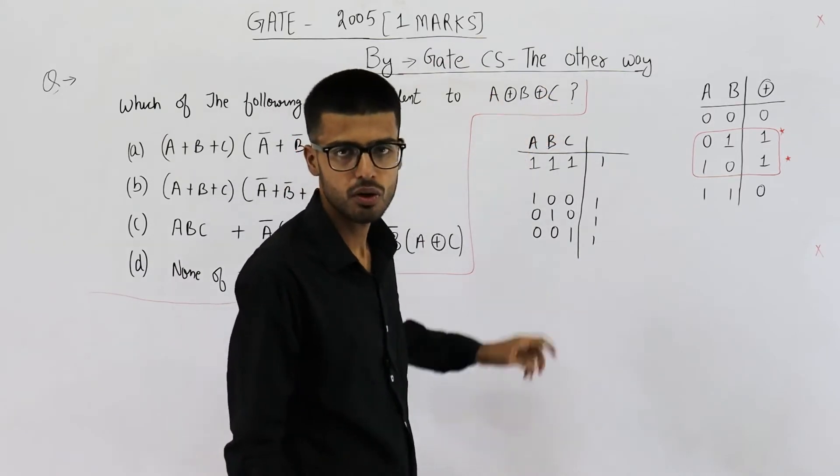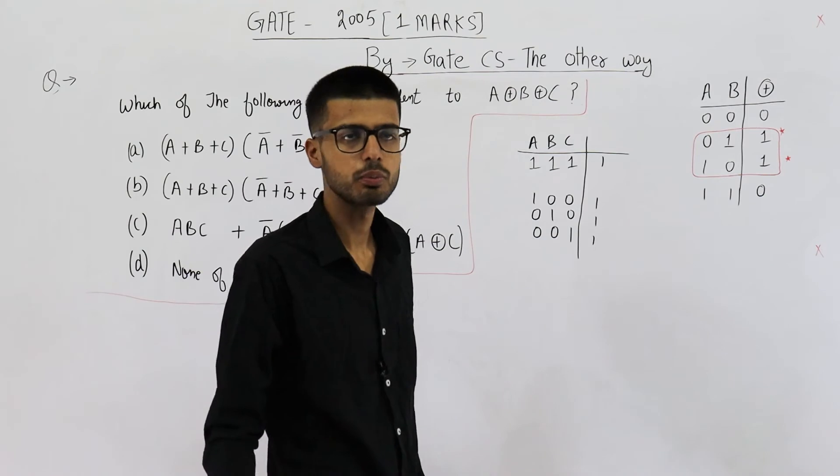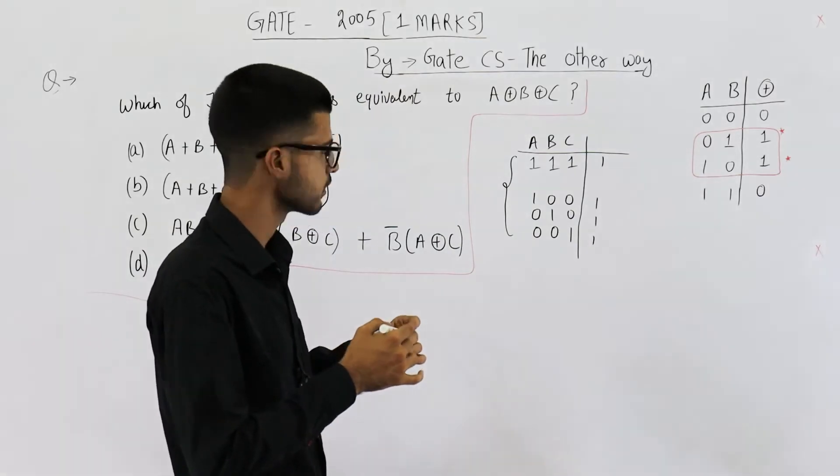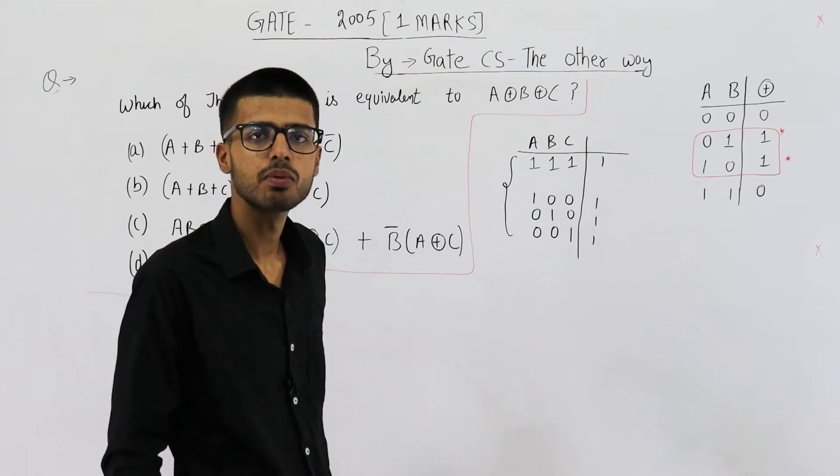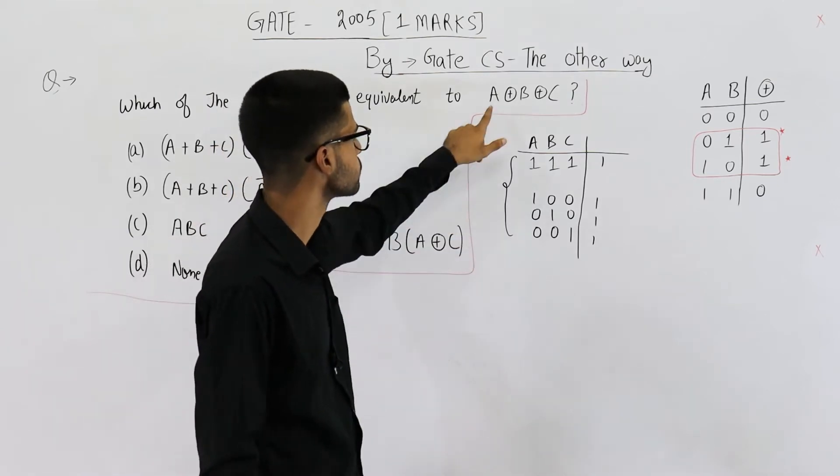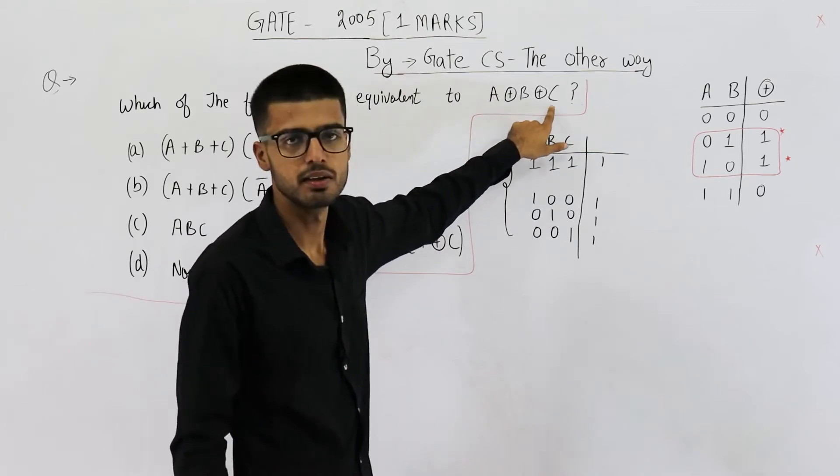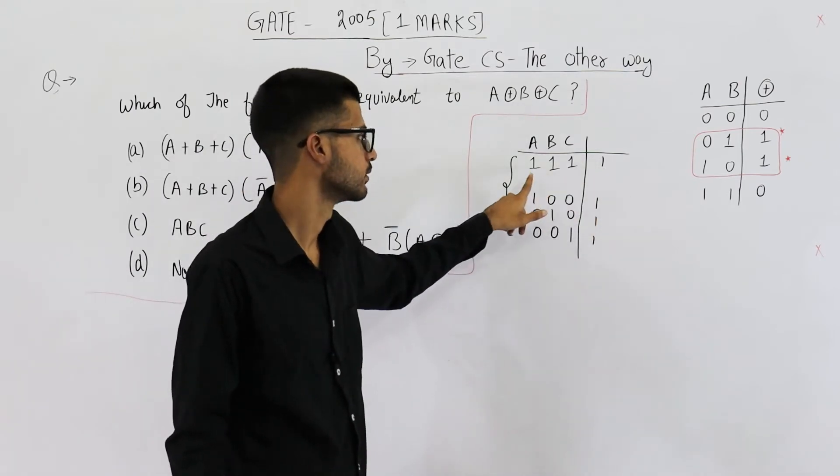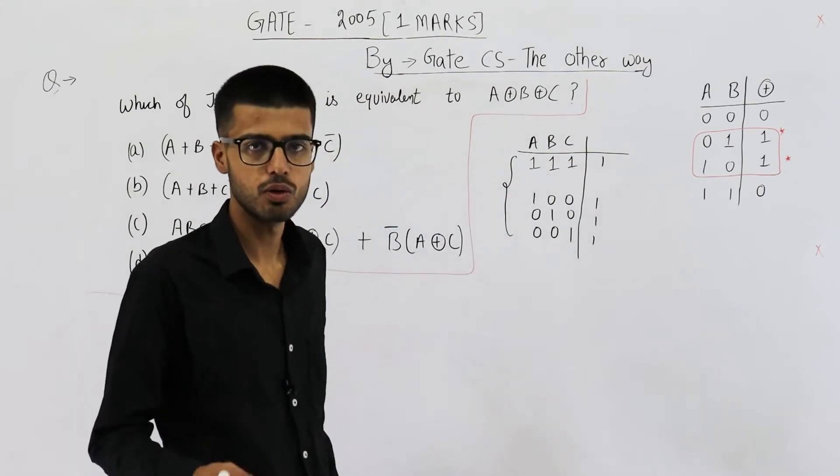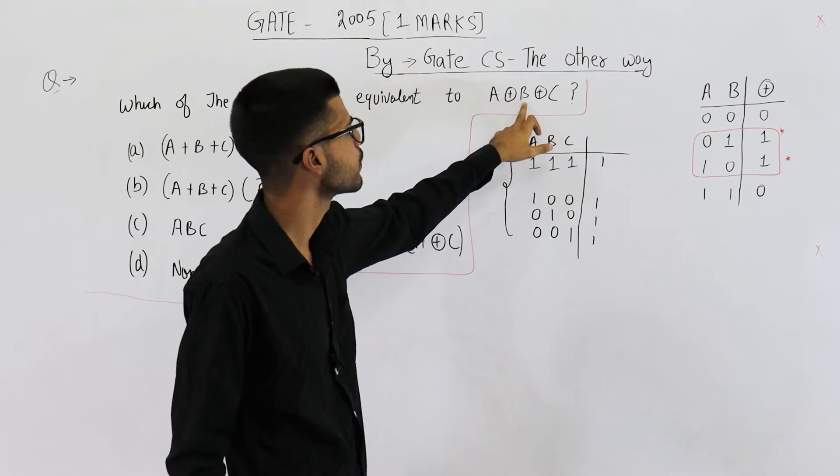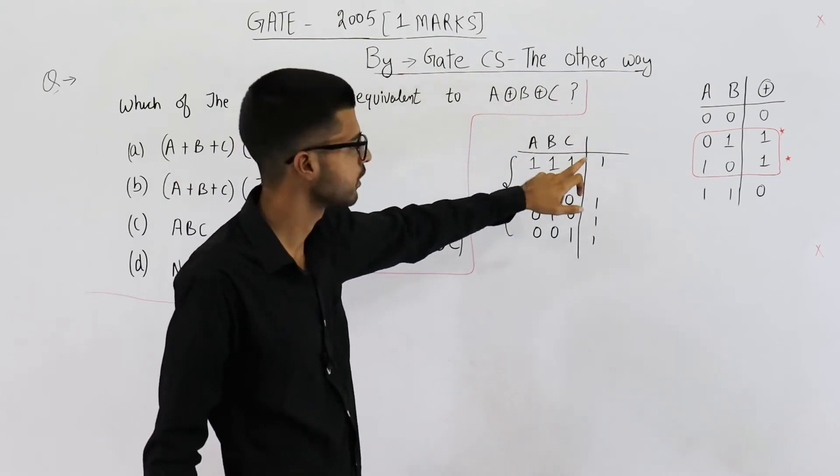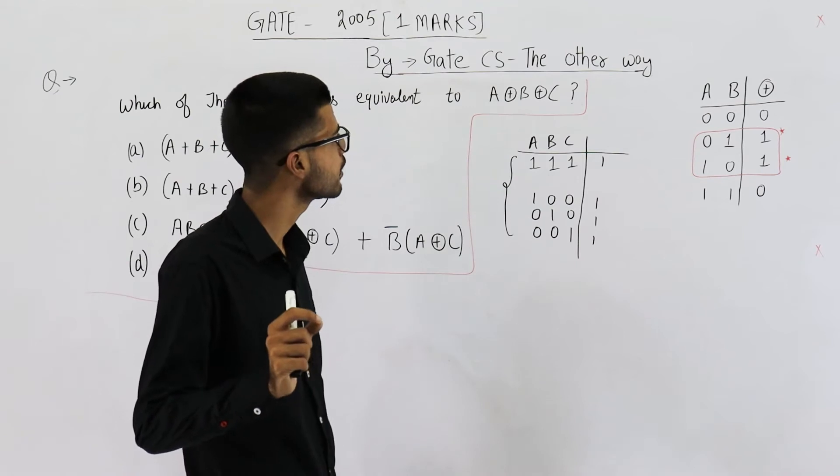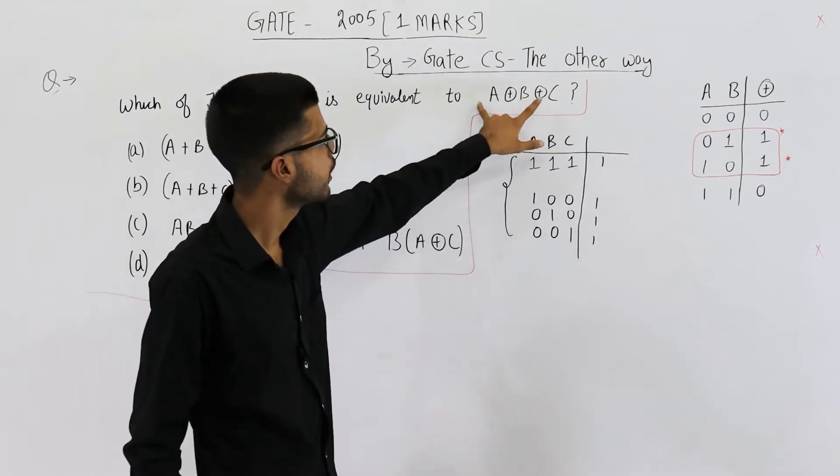Now, when is the XOR of three inputs going to be high? In these four cases. How do I know? Because XOR outputs high when odd number of inputs are high. What I mean? 1, 2, 3. 3 is an odd number. That means if all the three inputs are high, output is going to be high. So 1, 1, 1 will lead to output 1. You can even just see it. 1 XOR 1 is 0 and 0 XOR 1 will be 1. So it is high.